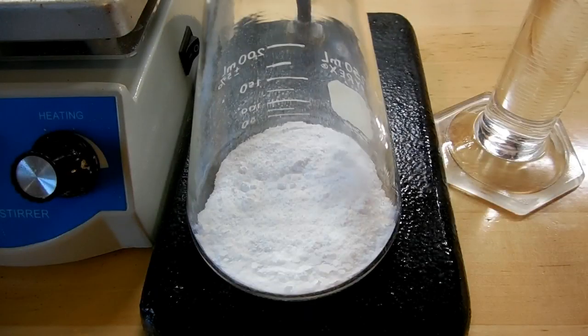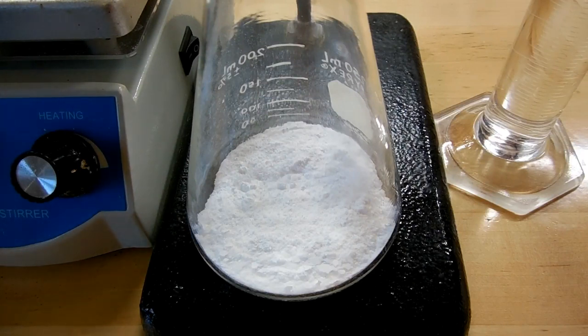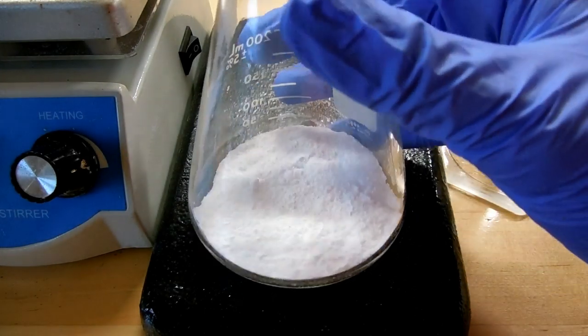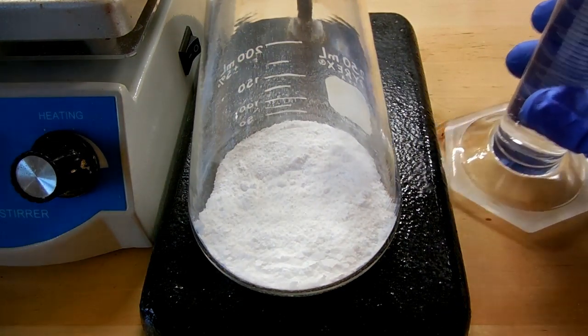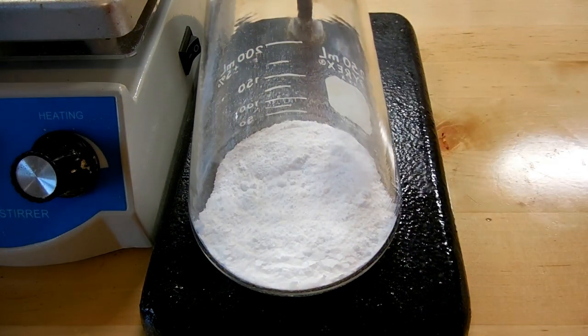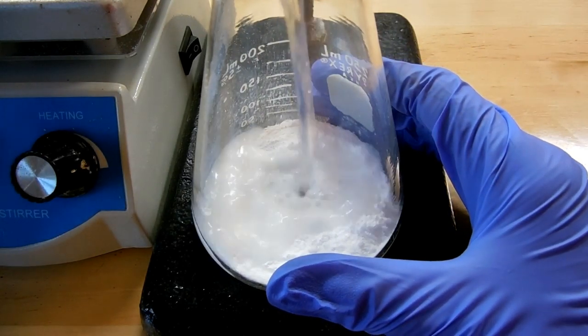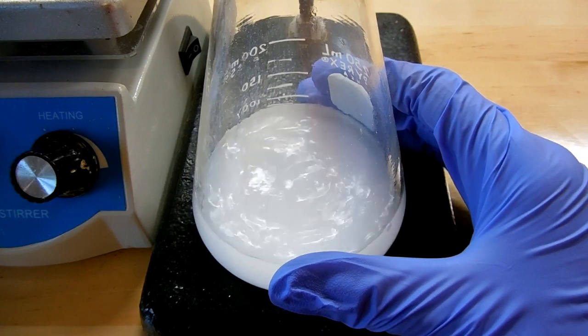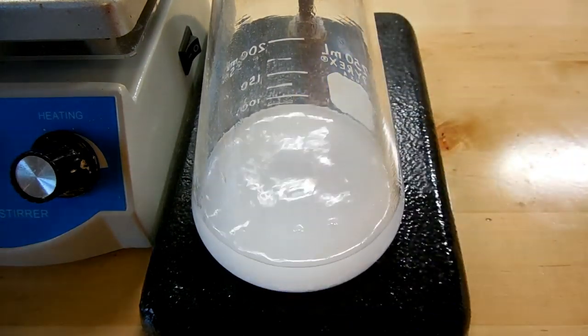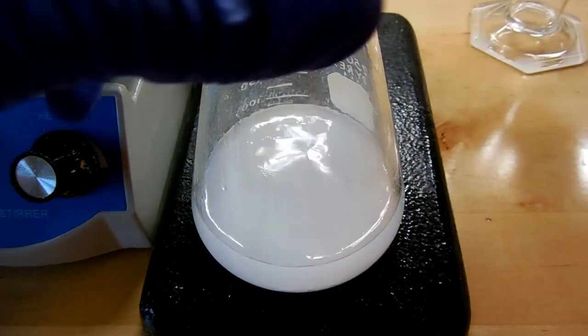I've ground the tablets down into a fine powder and gotten some other equipment out. Now we're going to add the methanol to the ground up aspirin tablets. I've got 60 milliliters of methanol in the graduated cylinder here that I'm going to add, and we want to swirl this around to try to dissolve as much as possible.